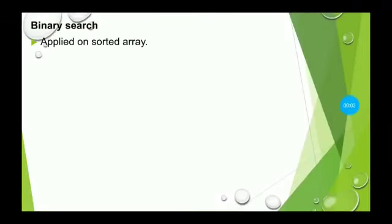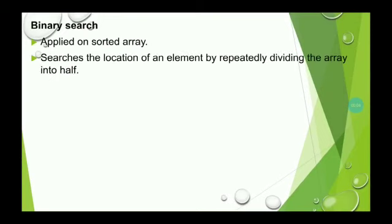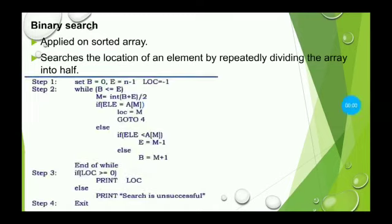Binary search works on a sorted array. It searches the location of an element by repeatedly dividing the array into half. Let us see the algorithm. Three variables are needed: b, e, and loc. b is set to 0 which is the beginning of the array; e is set to n minus 1 which is the end of the array; loc is used to store the location of the searched element and is initially set to minus 1.